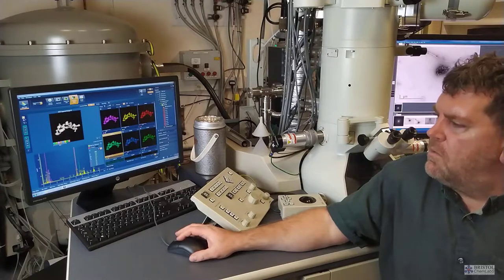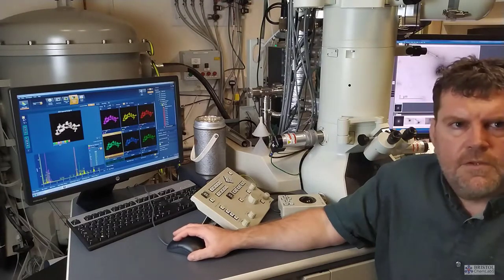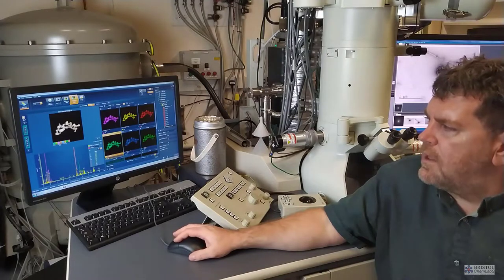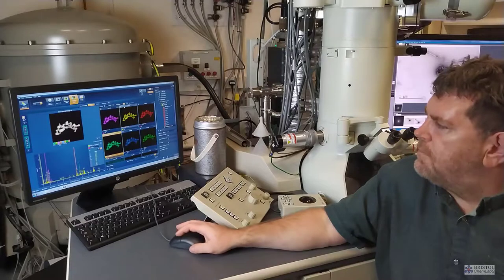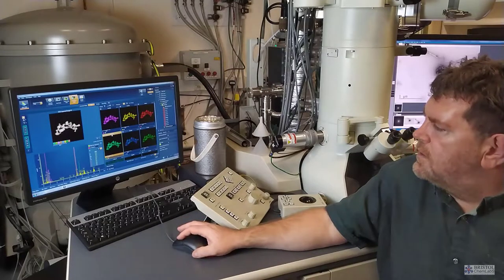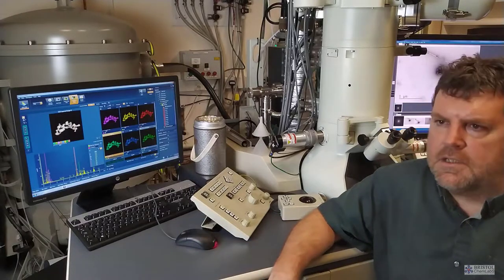So in this example here, we've got some samples that have been produced by one of the research groups on the crystalline nanomaterial, and we can see the distribution of copper, iron, oxygen, neodymium, cobalt, and chromium within those particles.